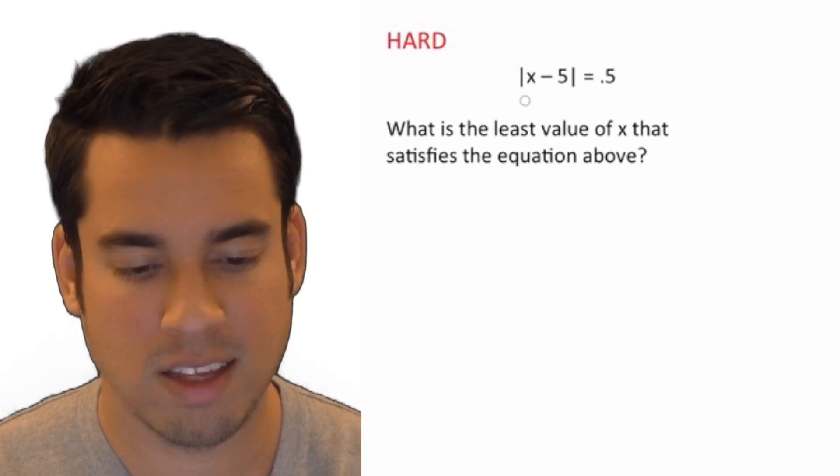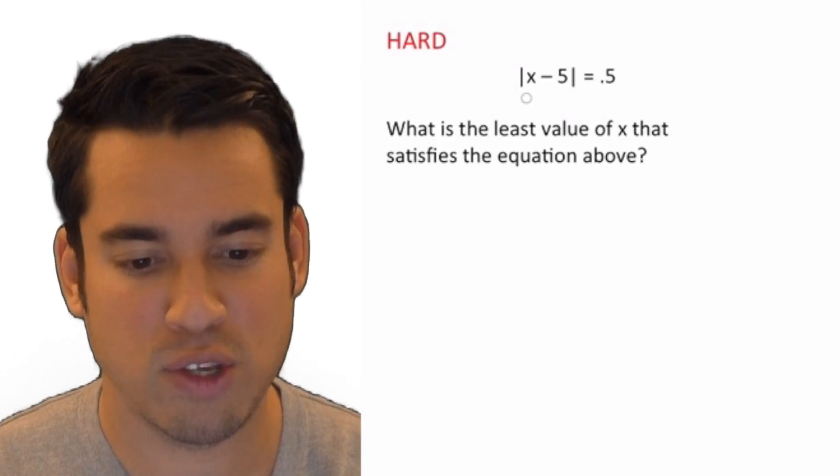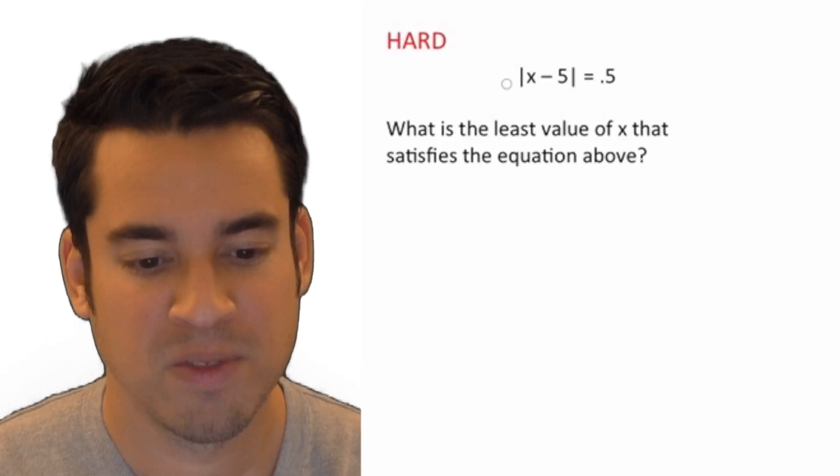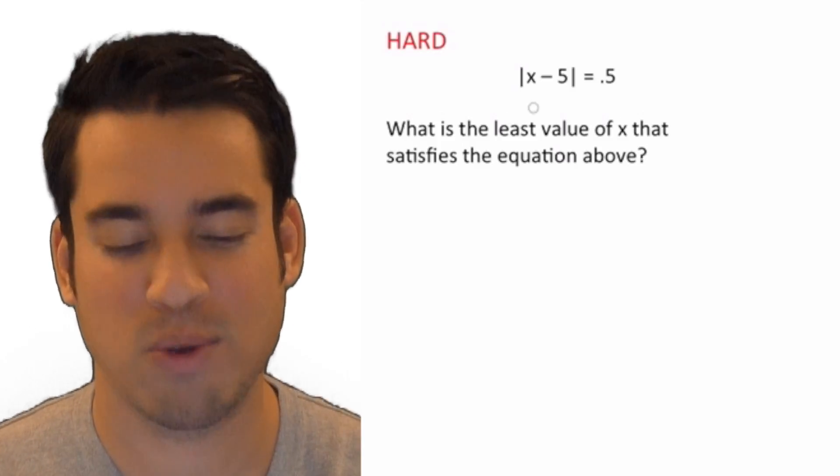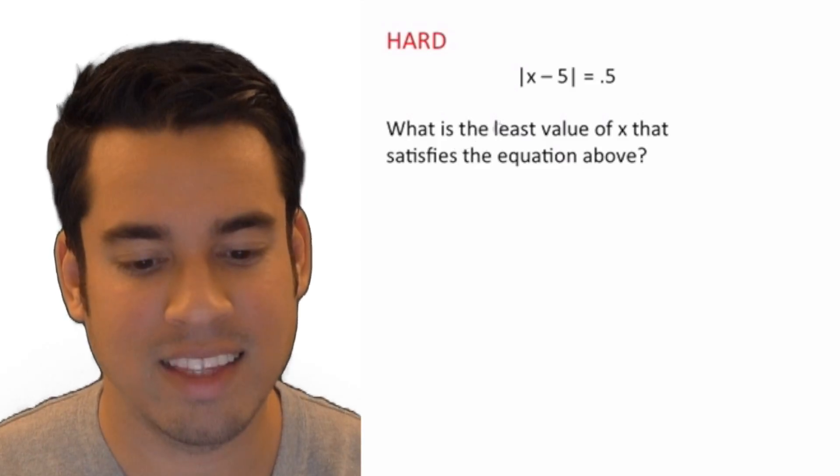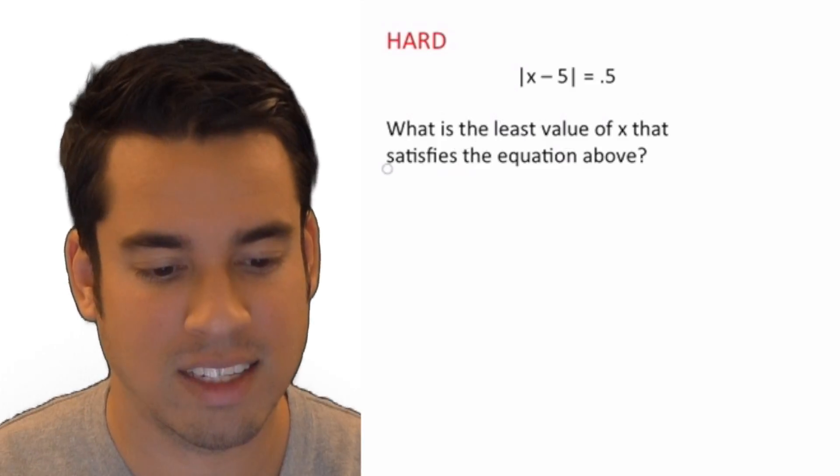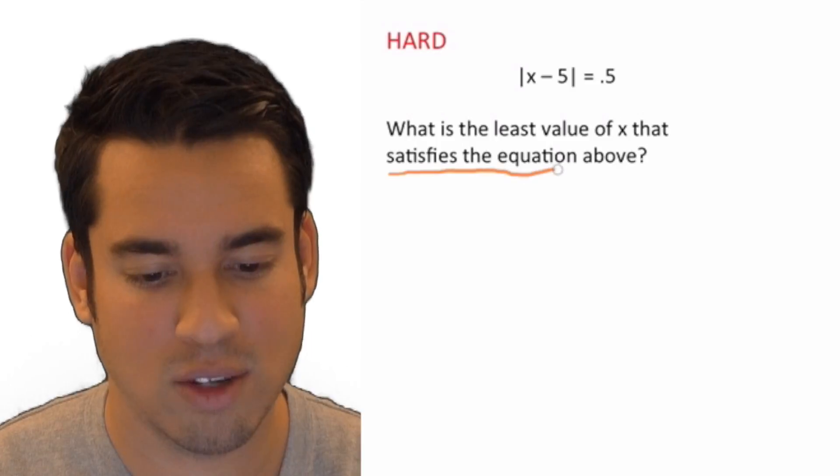So over here, we've got the absolute value of x minus 5 equals 0.5. So this is a very short question and it says, what is the least value of x that satisfies the equation above?